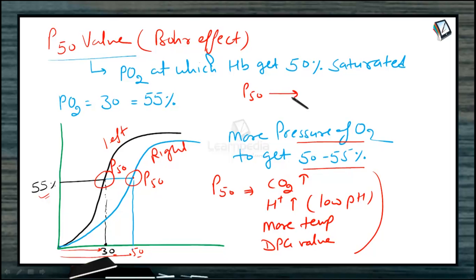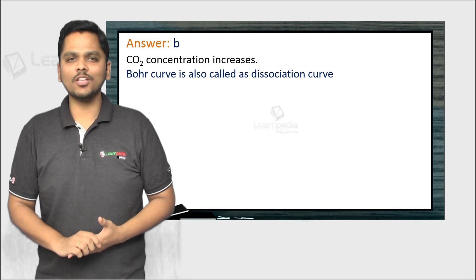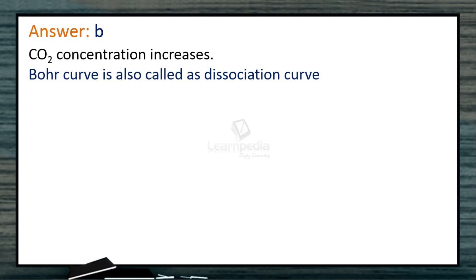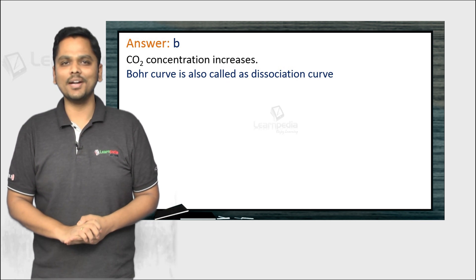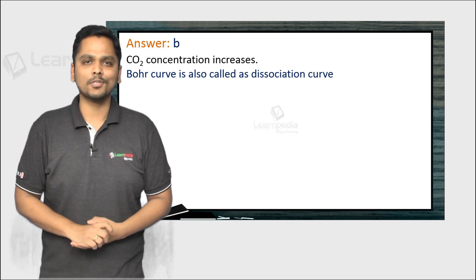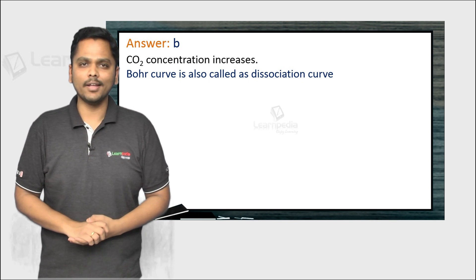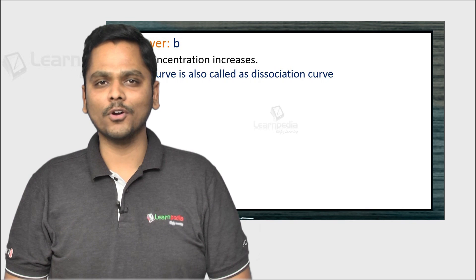If the P50 value reaches around 90–100 mmHg, it means even at very high oxygen pressures we cannot achieve 50% saturation, so there is no proper loading or unloading of oxygen and the person will die. Here's the answer to the question asked at the beginning. If you found this video useful, hit the like and share buttons. Learnpedia's JEE and NEET prep tools contain over 4,000 videos and over 20,000 questions, accessible online at www.learnpedia.in or offline via SD card or pen drive, with a free demo available before buying.